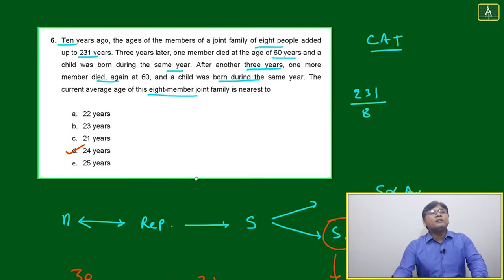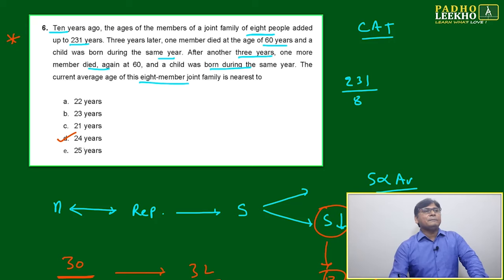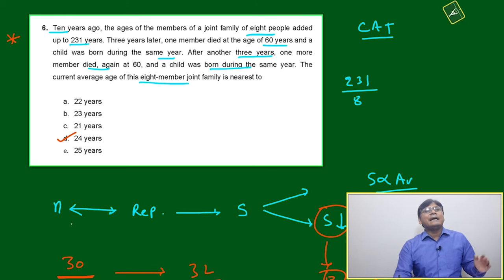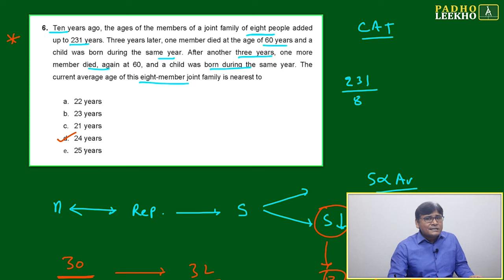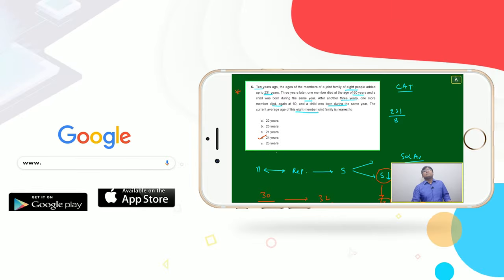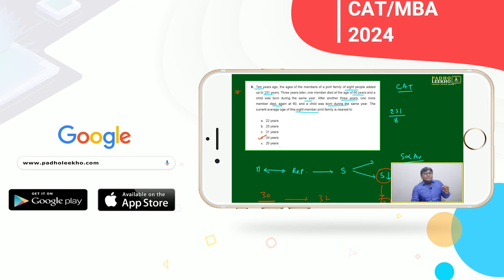This question is a good question to understand the concept of average and all three cases - n is increasing, n is decreasing, n is constant. If you understood very well, you will be able to do this question within one minute. If you have not understood, chances are you will do a mistake and mark the wrong answer because here all choices are consecutive numbers - that is another trap. Little mistake here or there you will mark another answer: 21, 22, 23, 24, 25 - all are consecutive numbers.